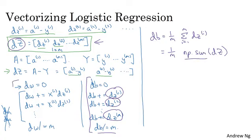How about dw? I'll just write out the correct equations. You can verify it's the right thing to do. dw turns out to be 1 over m times the matrix X times dZ transpose.